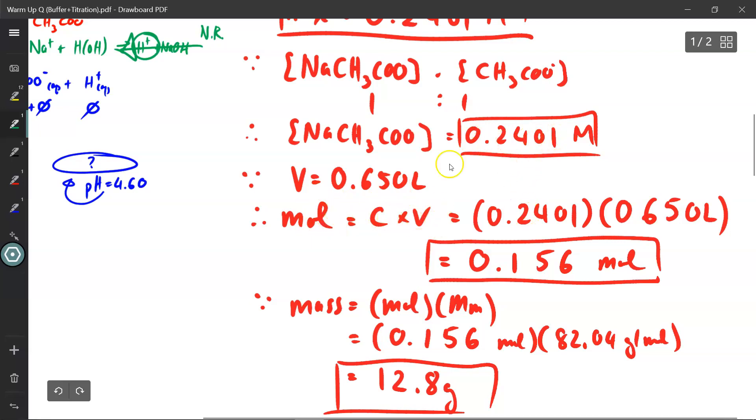I have the concentration C, I have the volume 0.650 liters. Just be careful, make sure that you have the 0.650 liters because it is a liter solution, not milliliters. And you'll get 0.156 moles of sodium acetate required.